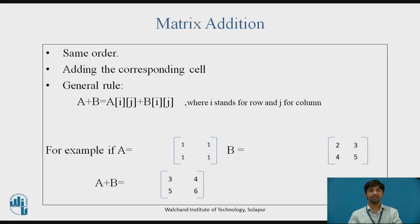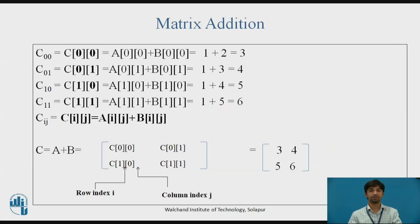For example, if A is a matrix with elements 1 1 1 1, and B is 2 3 4 5, the sum of the two matrices will be 3 4 5 6. In matrix addition, the addition of corresponding cell elements from both A and B matrices is performed in this process.